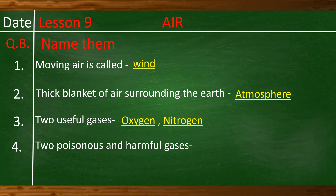Number 4: Two poisonous and harmful gases — Methane and Carbon dioxide. Methane spelling: M-E-T-H-A-N-E. Carbon dioxide spelling: C-A-R-B-O-N D-I-O-X-I-D-E.